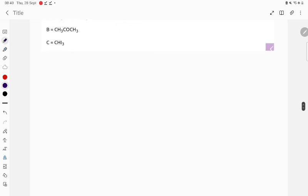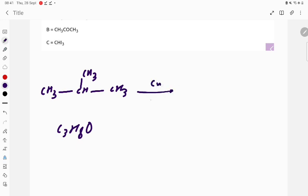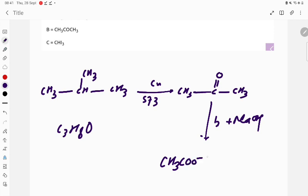Here is CH3-CH-CH3 with OH, so C3H8O. When you pass it with copper at 573 kelvin, it will give CH3-CO-CH3 through dehydrogenation reaction. This methyl ketone, if you treat with I2 and NaOH, will give CH3COO- plus CHI3, the yellow precipitate.